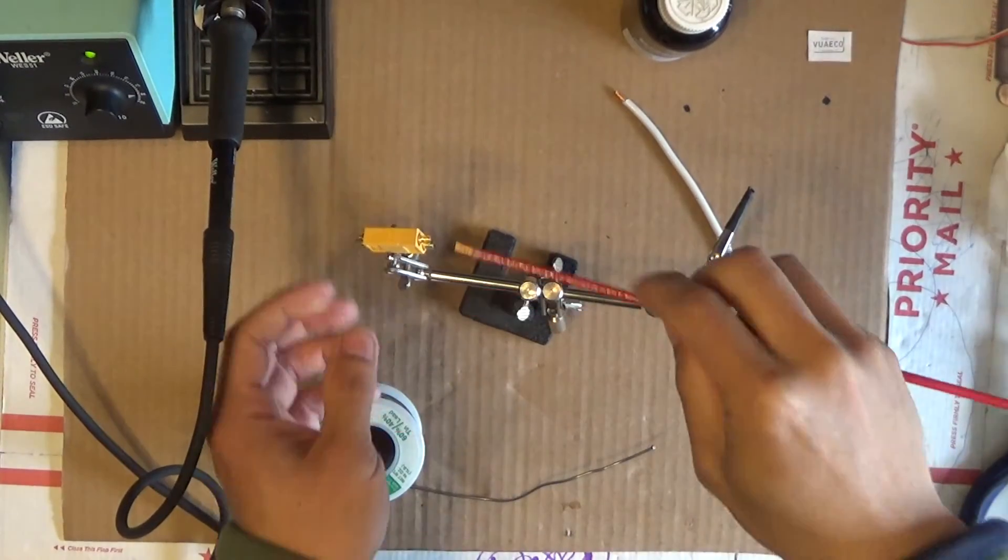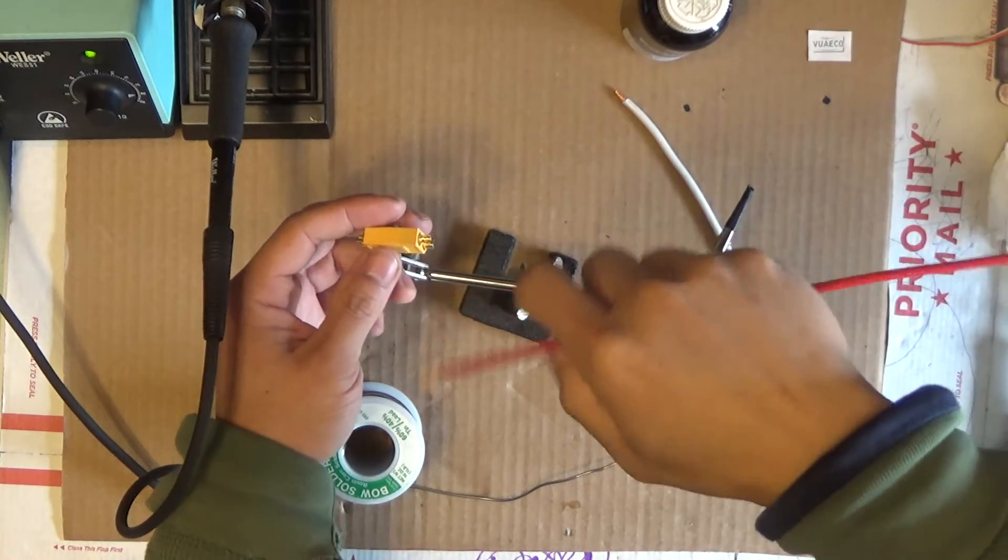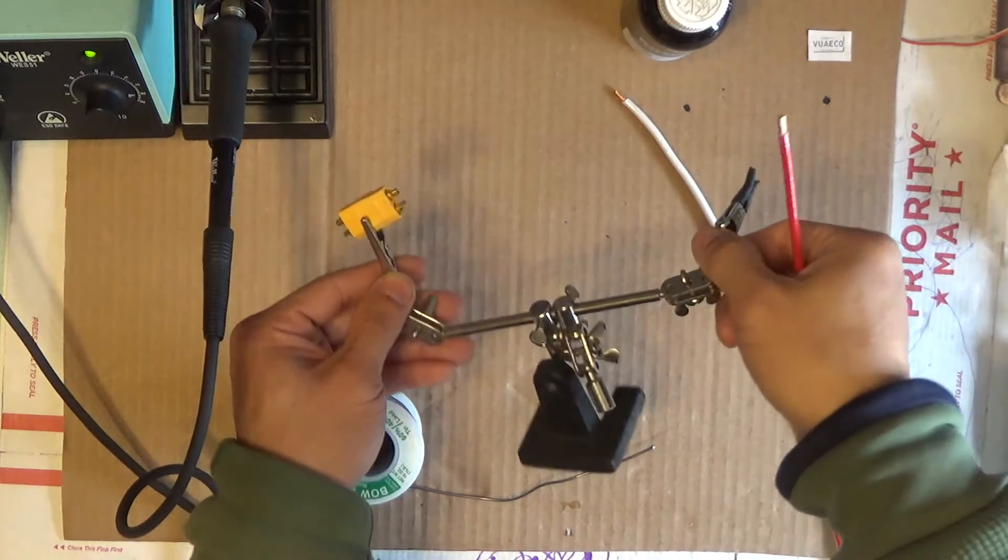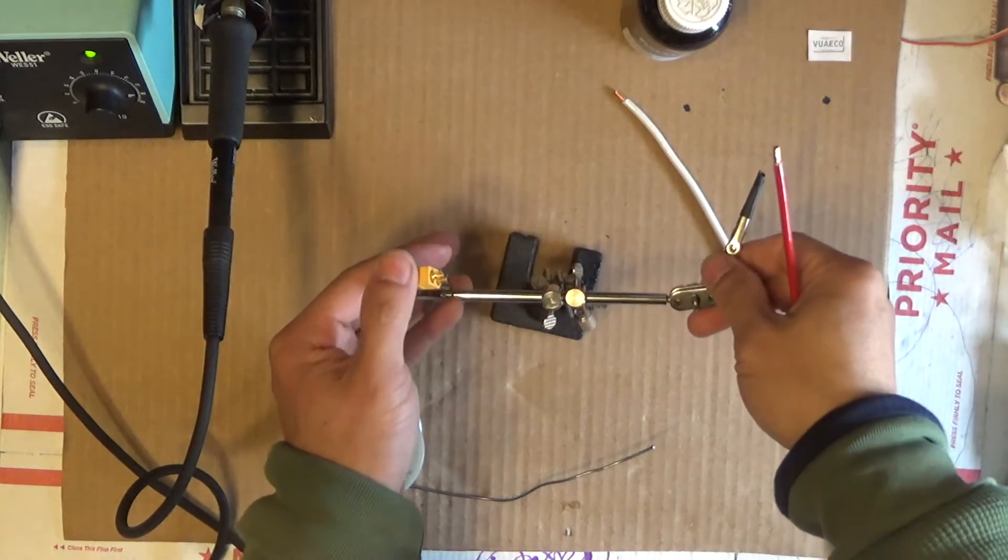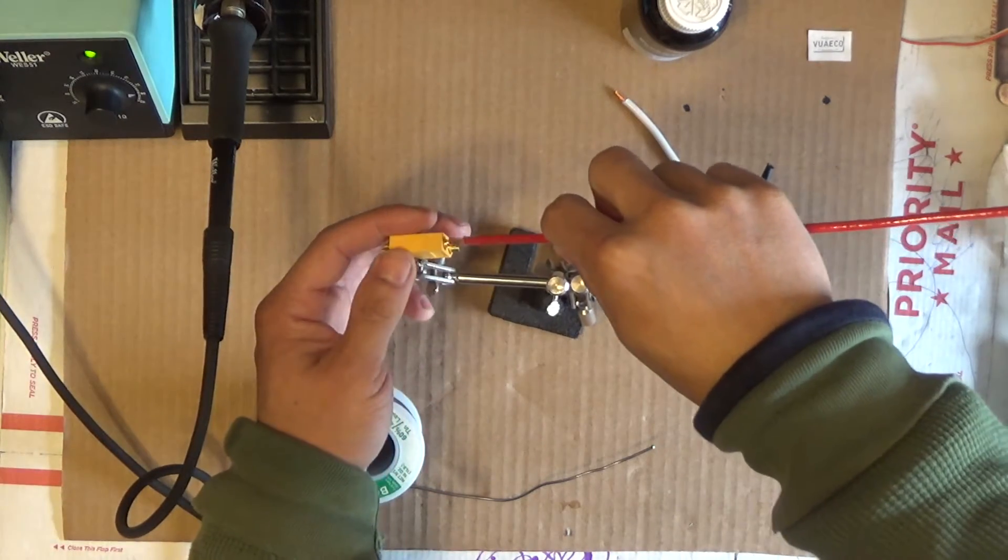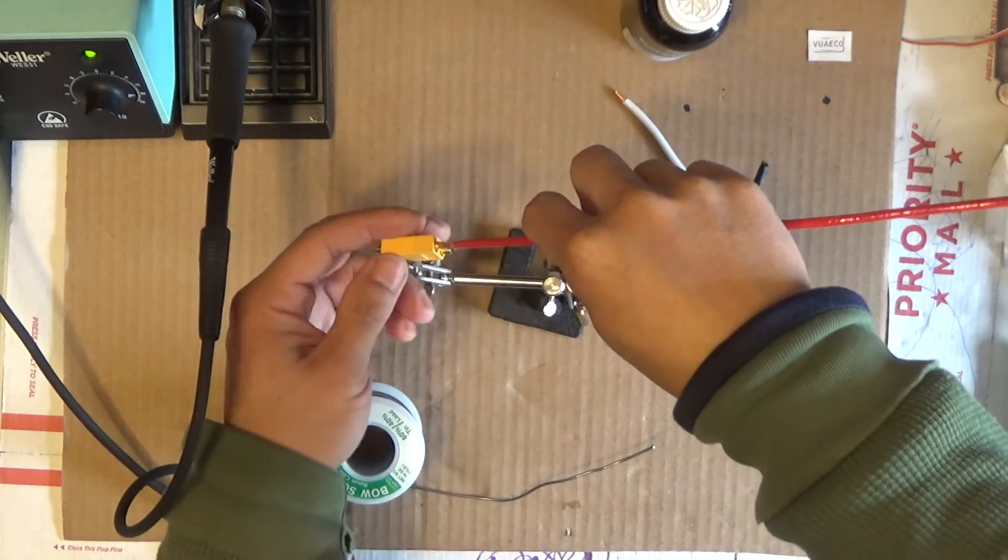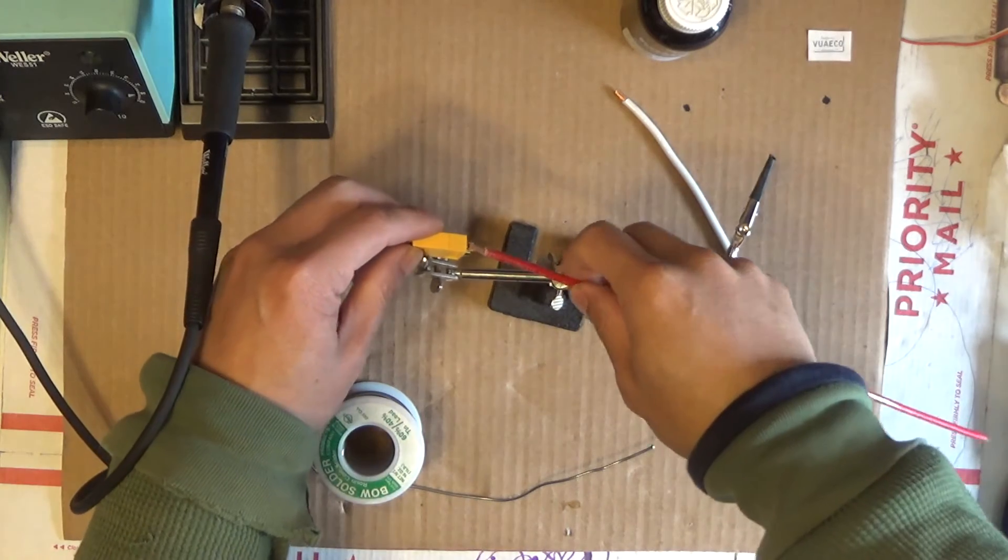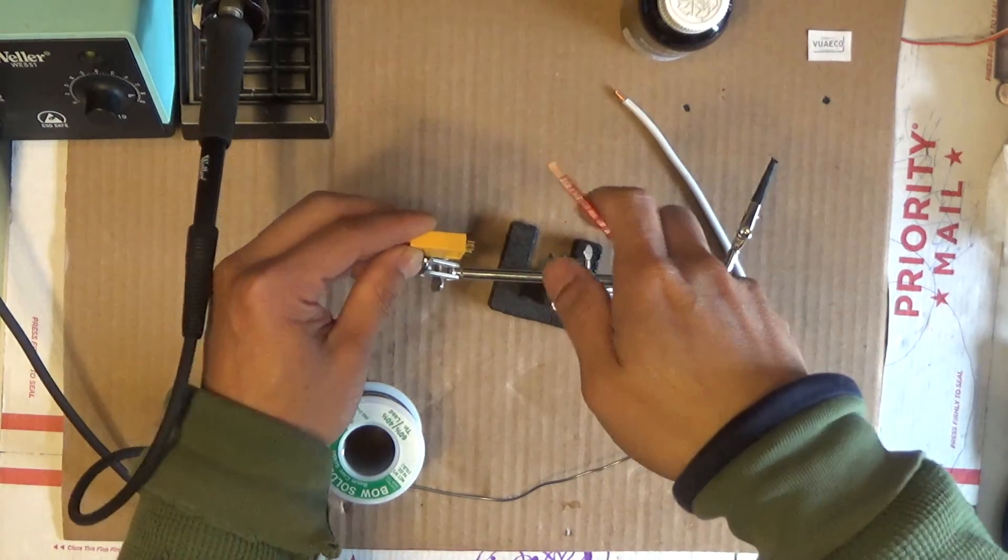So when you solder the wire onto the connector, make sure that it's going downhill toward the connector, okay? Going down, so gravity will pull the solder downward into the connector. If you run the other way, the solder is going to flow out of the connector, that's not what you want.